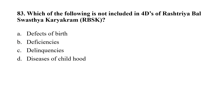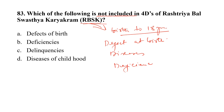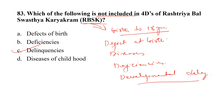Question number 83. Which of the following is not included in the 4Ds of Rashtriya Bal Swasthya Karyakram (RBSK)? Option A, defects at birth; Option B, deficiencies; Option C, delinquency; Option D, disease of childhood. RBSK involves screening of children from birth to 18 years of age for the 4Ds: defects at birth, diseases of childhood, deficiencies, and developmental delay. The correct option is C — delinquency is not included.